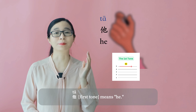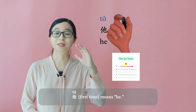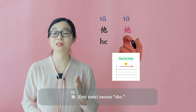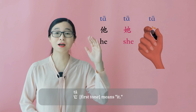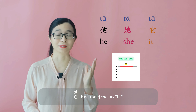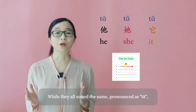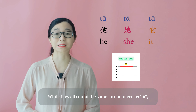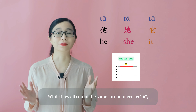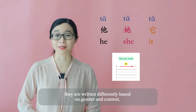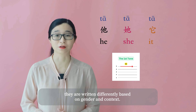他 (tā, first tone) means he. 她 (tā, first tone) means she. 它 (tā, first tone) means it. While they all sound the same, pronounced as tā, they are written differently based on gender and context.